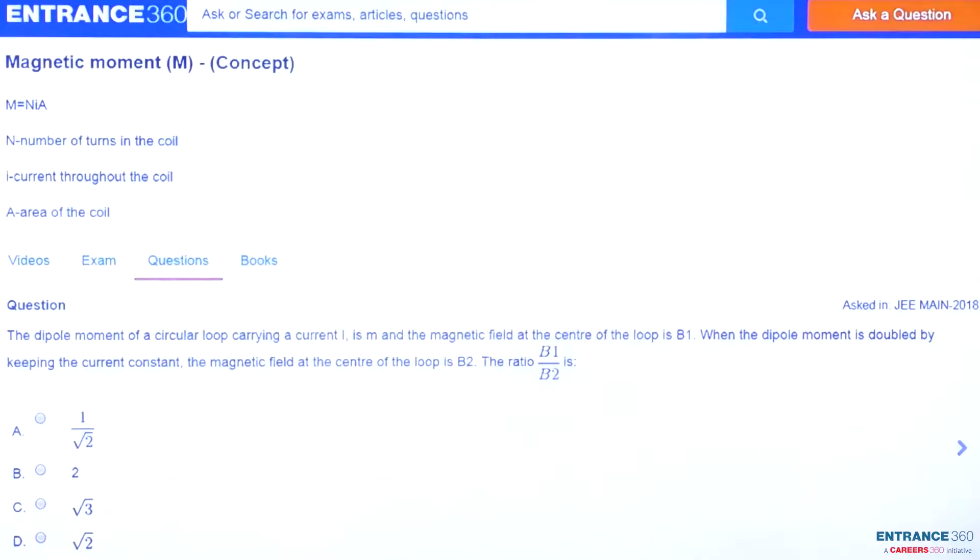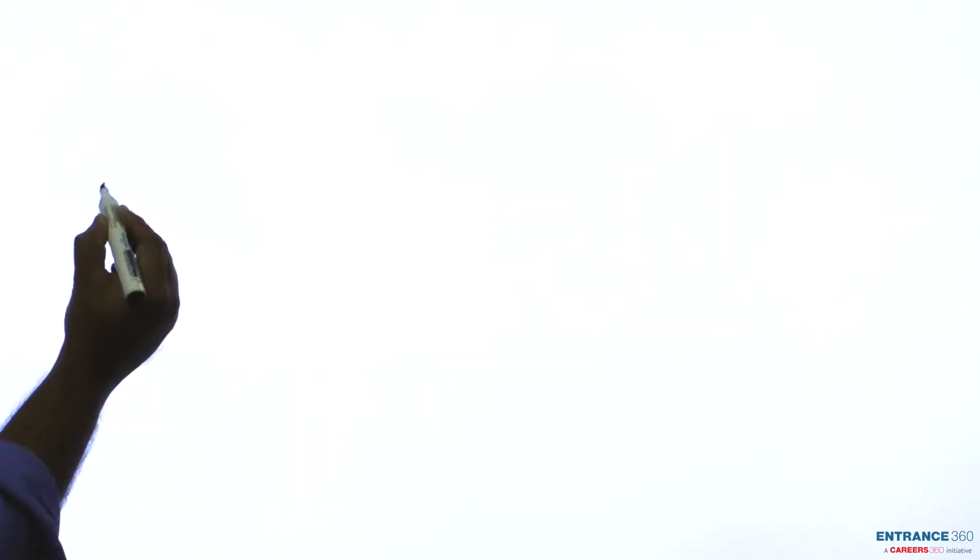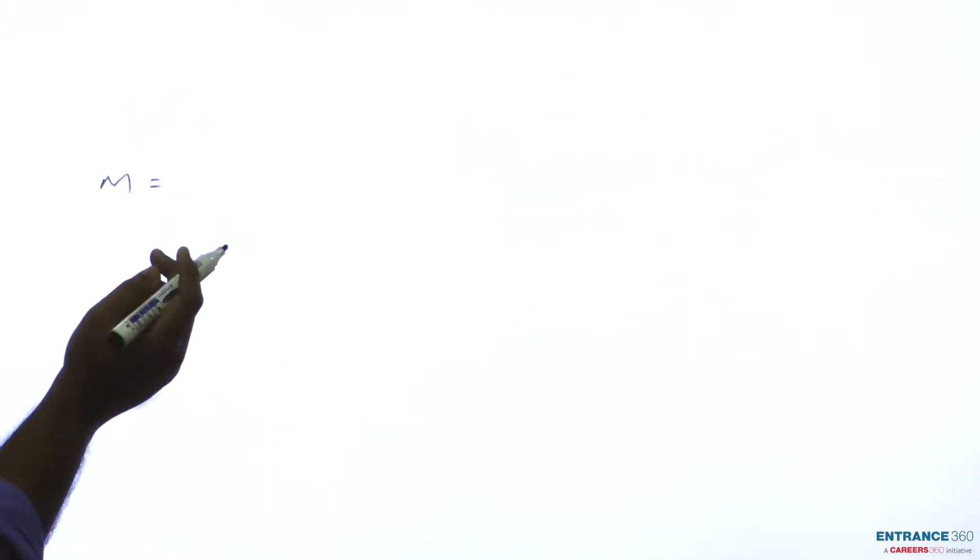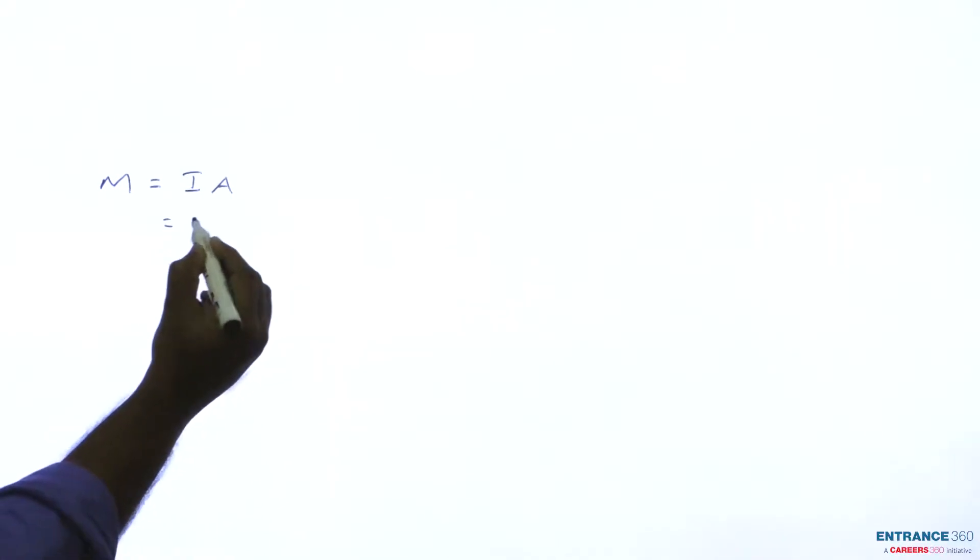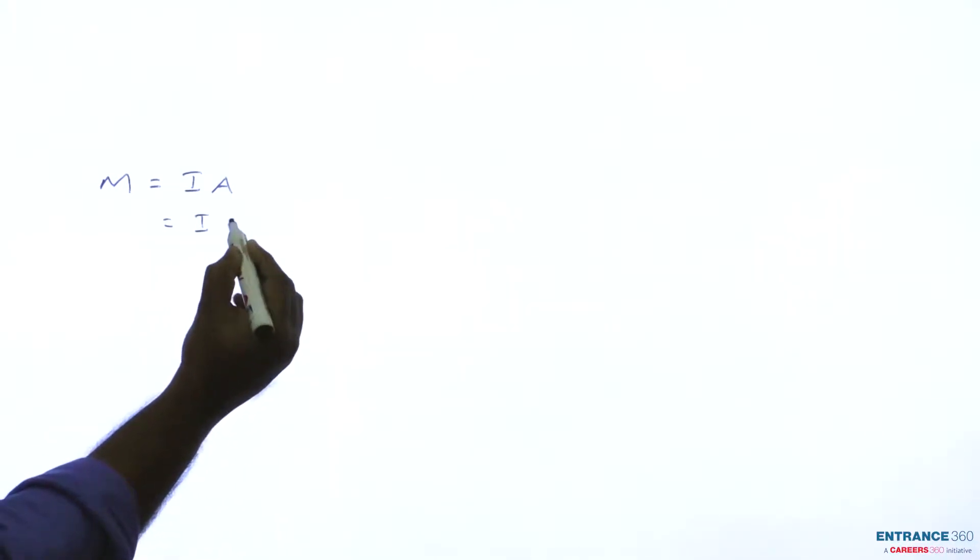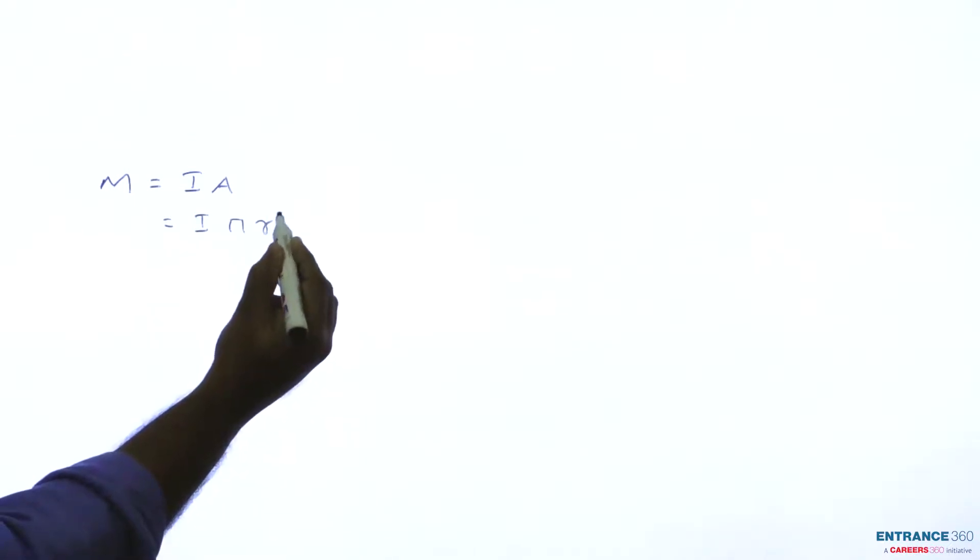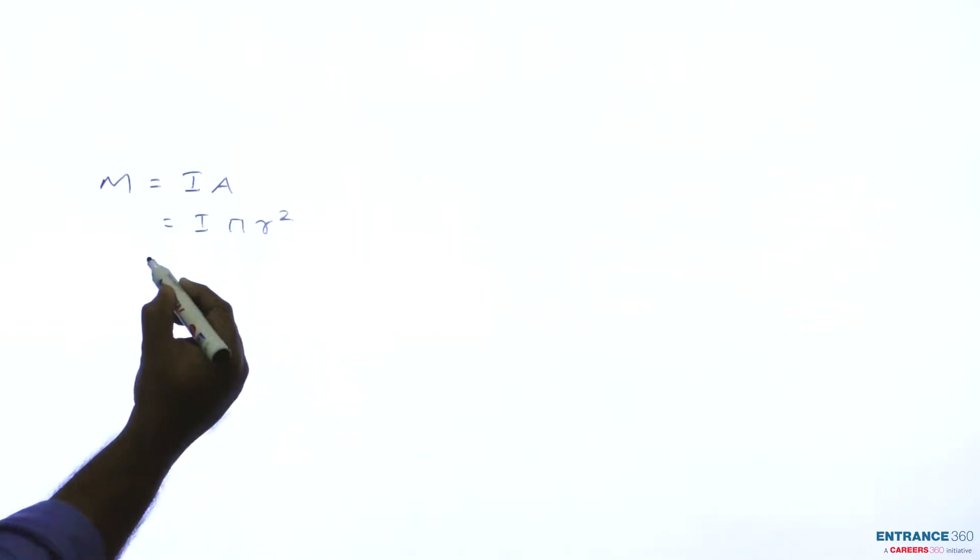Then we have to find out the ratio of b1 by b2. Let's see how to solve this. Magnetic moment m equals n into i times a. Our circular loop is of one turn, so we can write it as i into a, where area is the area of the circular loop, which is pi r square. From here we can tell that